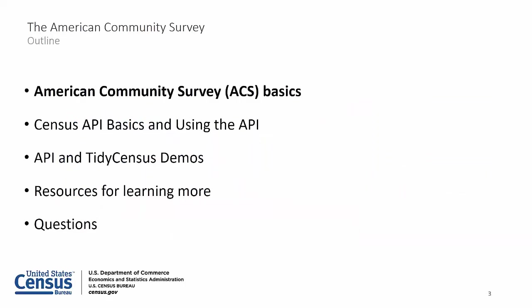Based on previous feedback about the API webinars, we've heard that users constantly want new and different ways to use the API. Every time we run this webinar, we try to build upon what we've done previously. Previously, we've talked about the basics of using an API and loading data into Excel. Today we'll introduce ways to pull data using statistical software. We'll go over ACS basics, the anatomy of an API query, demos on basic API calls, loading ACS data into R using TidyCensus, resources, and ways to get involved. We will take questions at the end.